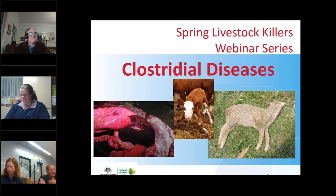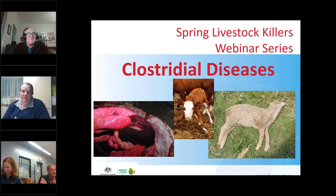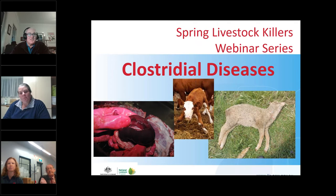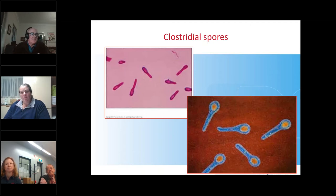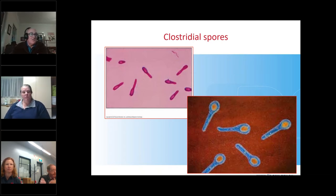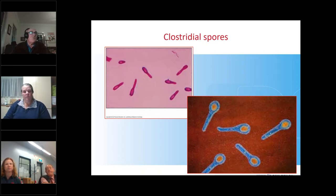Andrew, what is a clostridial disease? Put simply, clostridial diseases are diseases caused by a group of bacteria called clostridia. There's a whole series of bacteria in the group — those rather pretty pictures on the screen show what they look like under a microscope. The different bacteria produce different toxins which ultimately cause diseases like pulpy kidney, tetanus, blackleg, and botulism — the diseases we routinely link with clostridial vaccination.